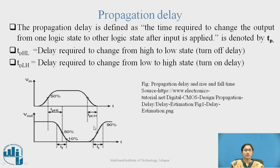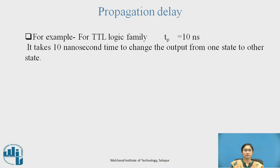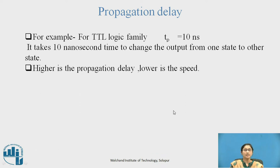TPLH is the delay required to change from low state to high state. At the output, we get the high signal. For example, for the TTL logic family, Tp is equal to 10 nanoseconds — it takes 10 nanoseconds to change the output from one state to another. Higher propagation delay means lower speed. Rise time and fall time do not have to be the same.